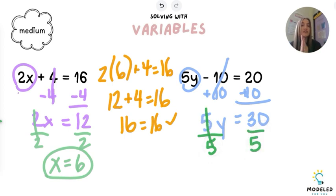My 5s cancel each other out. I bring down my y, and what's 30 divided by 5? 30 divided by 5 is 6. So y equals 6.